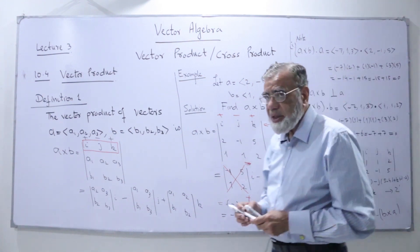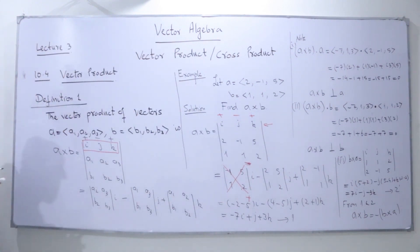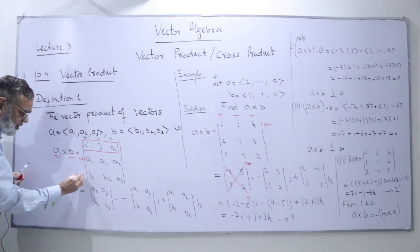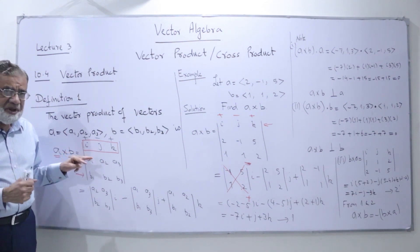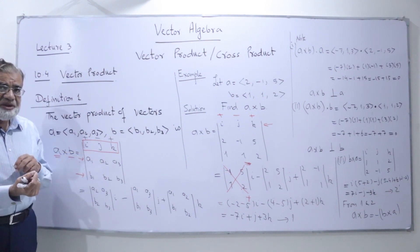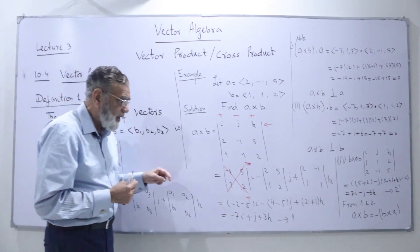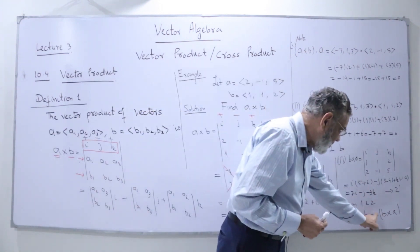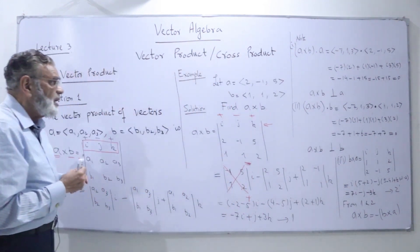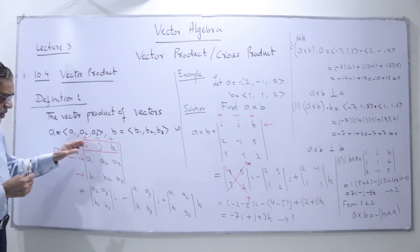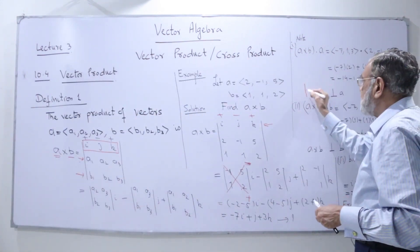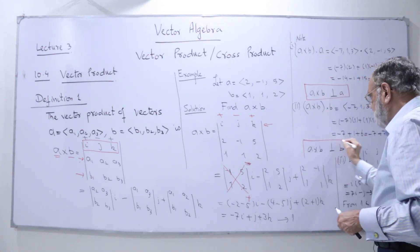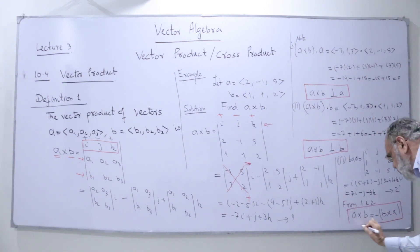This was the definition and some of the properties of the cross product. To summarize: we take the cross product using the determinant with i, j, k in the first row, then components of a and b. The key properties are: a cross b is orthogonal to a, a cross b is orthogonal to b, and a cross b equals minus b cross a — because interchanging two rows of a determinant gives a minus sign.